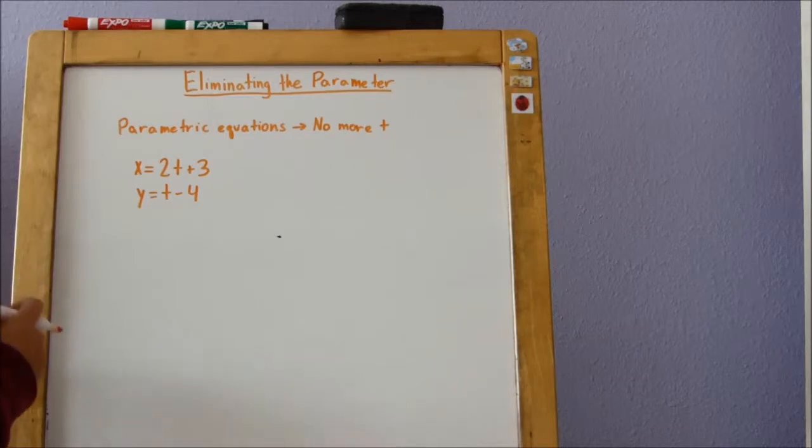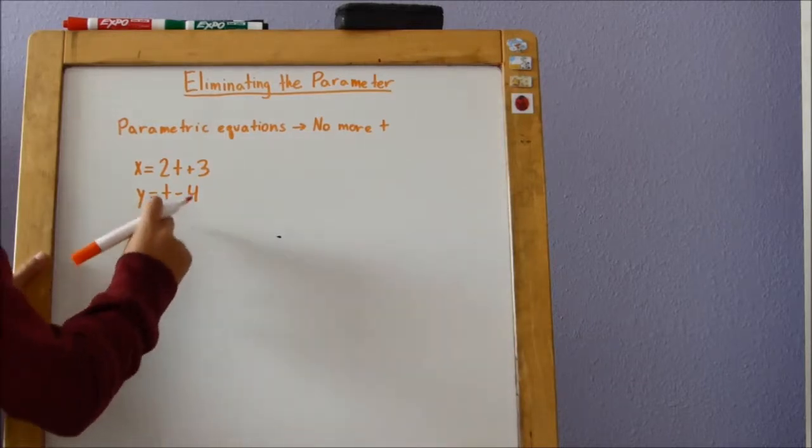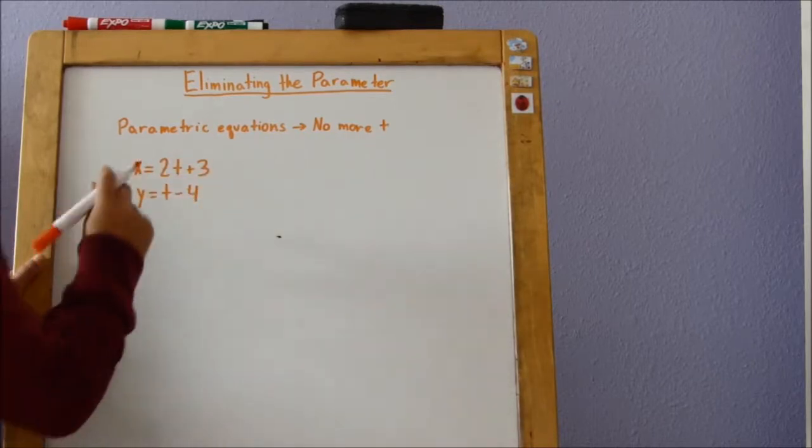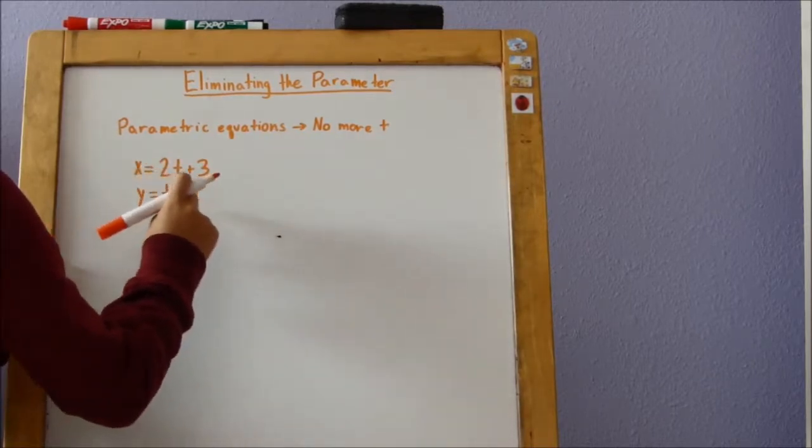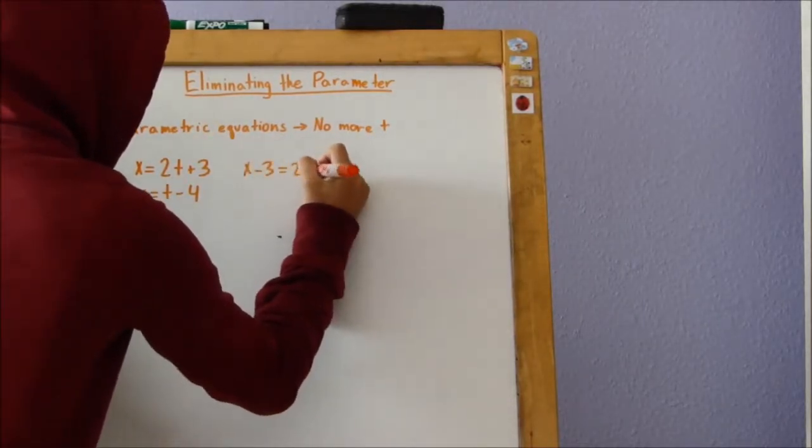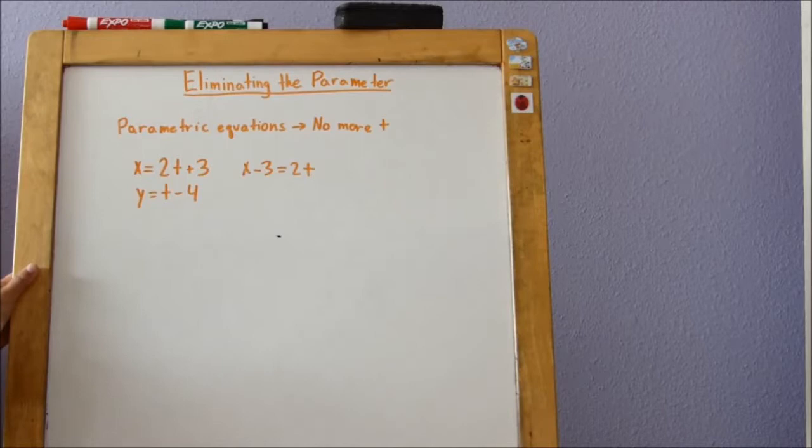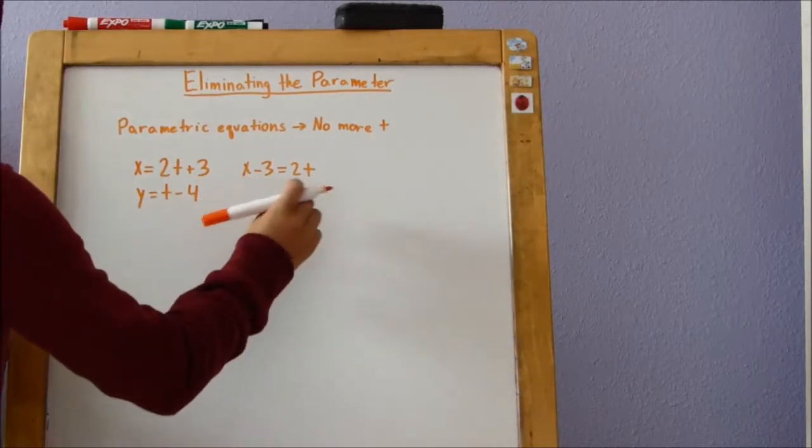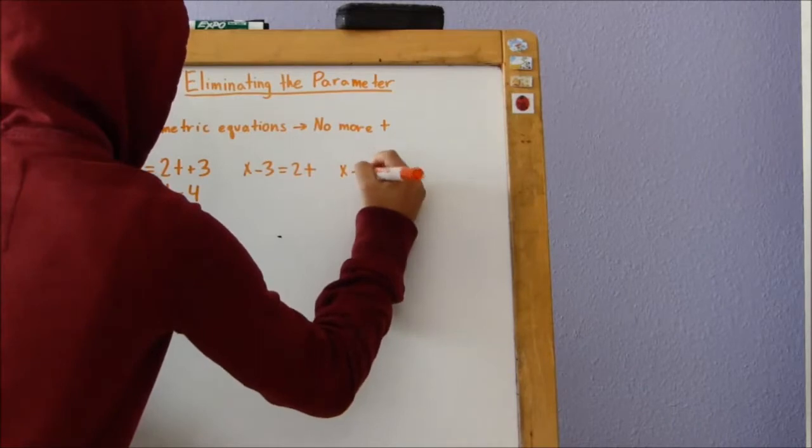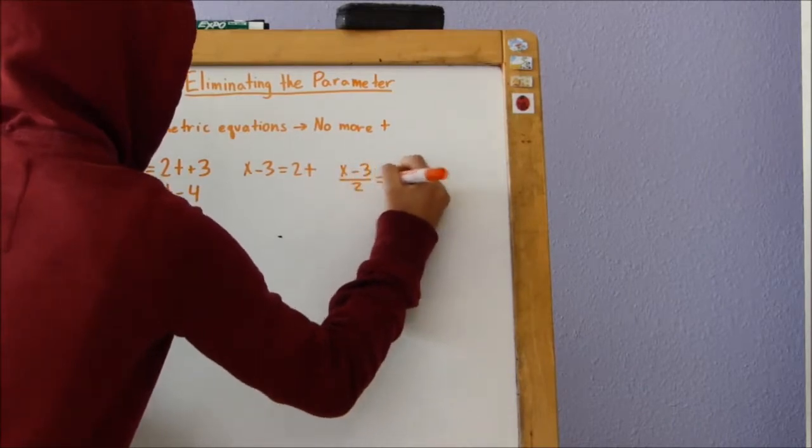First step, since we want it to be a y equals, we're going to solve for t using this equation here, the x equals. So the first thing that we do is subtract 3 from both sides. x minus 3 equals 2t. The next step we do is divide both sides by 2 to leave t isolated here. x minus 3 divided by 2 equals t.